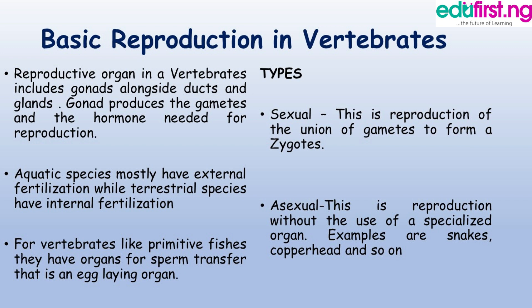Reproductive organs in invertebrates include gonads. Gonads produce the gametes and hormones needed for reproduction. In aquatic species we have external fertilization, while in terrestrial species we have internal fertilization. For vertebrate-like primitive species, they have organs for sperm transfer.